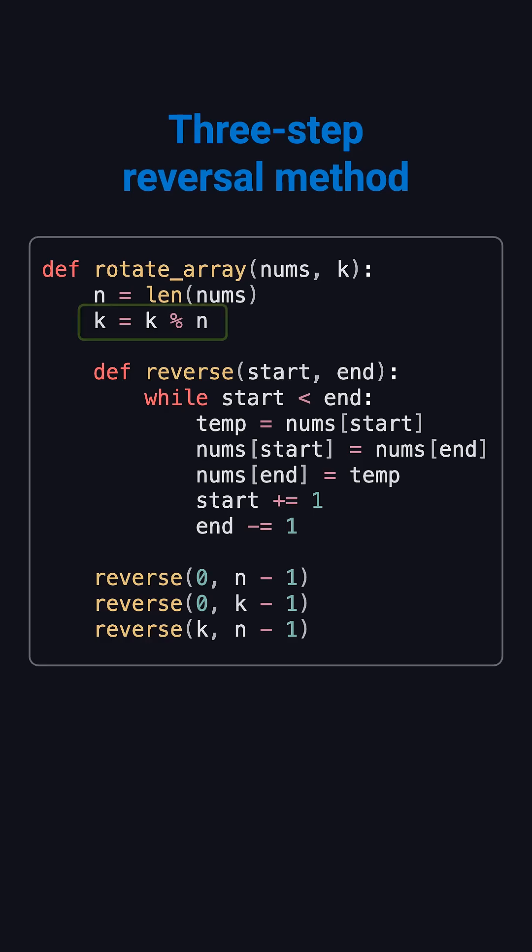The code's pretty simple, but here's an important detail. Always take k mod n. If k is bigger than the array length, say k equals 10 and n equals 7, rotating 10 steps is really just the same as rotating 3.